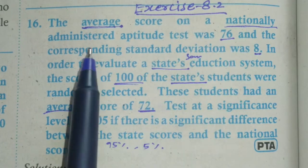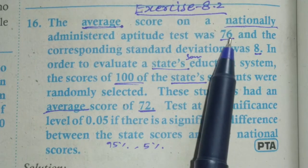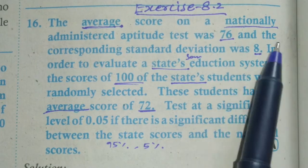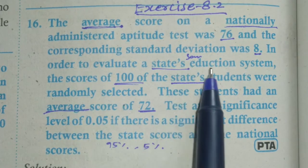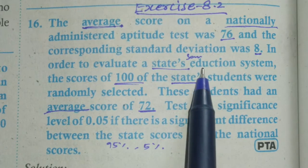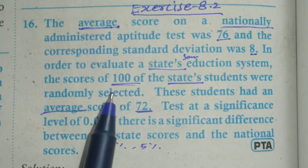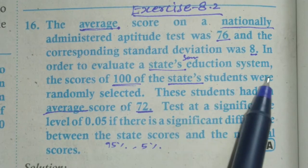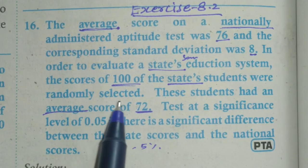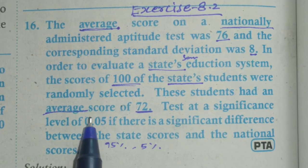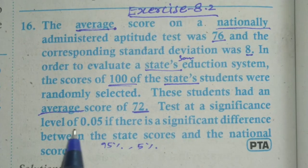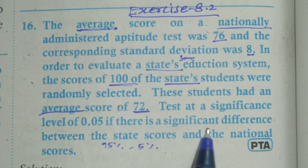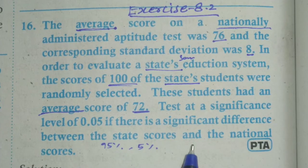The average score on a National Administration Aptitude Test was 76, and the corresponding standard deviation was 8. In order to evaluate a state education system, the scores of 100 state students were randomly selected. These students had an average score of 72. Test at a significance level of 0.05 whether there is a significant difference between the state scores and the national scores.